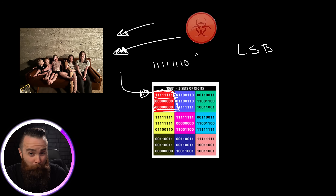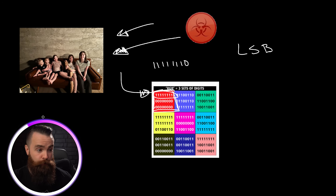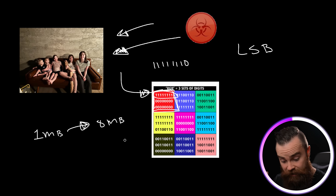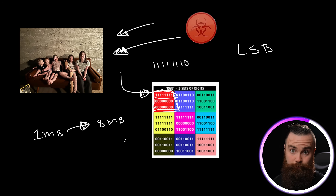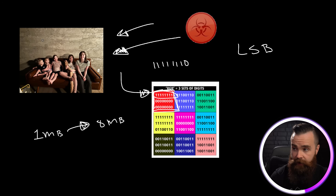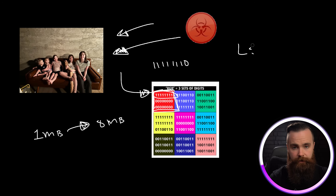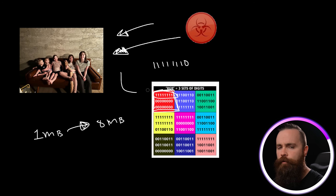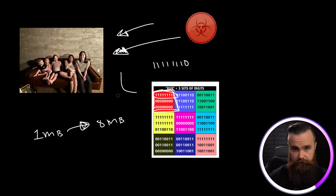Because we're only storing one small piece of data in each pixel, we need a fairly large cover file. For example, if our malware was one megabyte, with LSB we would need an eight megabyte photo to hide it in. So as you're playing around with steganography, keep that in mind - you might run into an issue where it says the file is too big, you need a bigger cover file. Now Steghide doesn't actually use LSB. LSB can be pretty easily detected by computers and anti-malware software. So Steghide uses something called graph theory, which is way too much for this video.